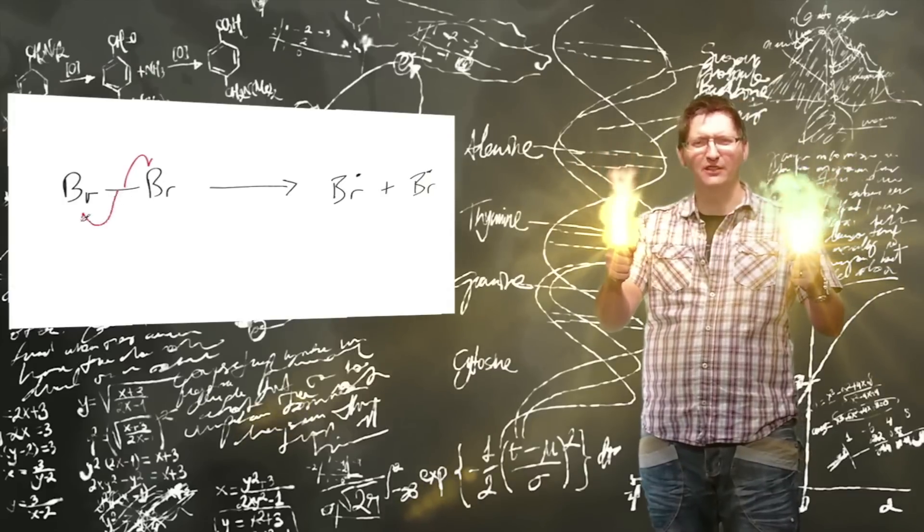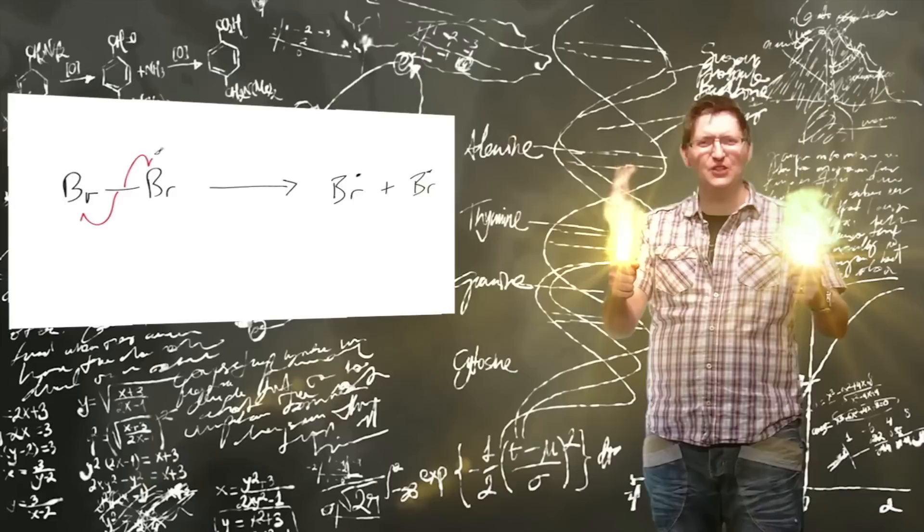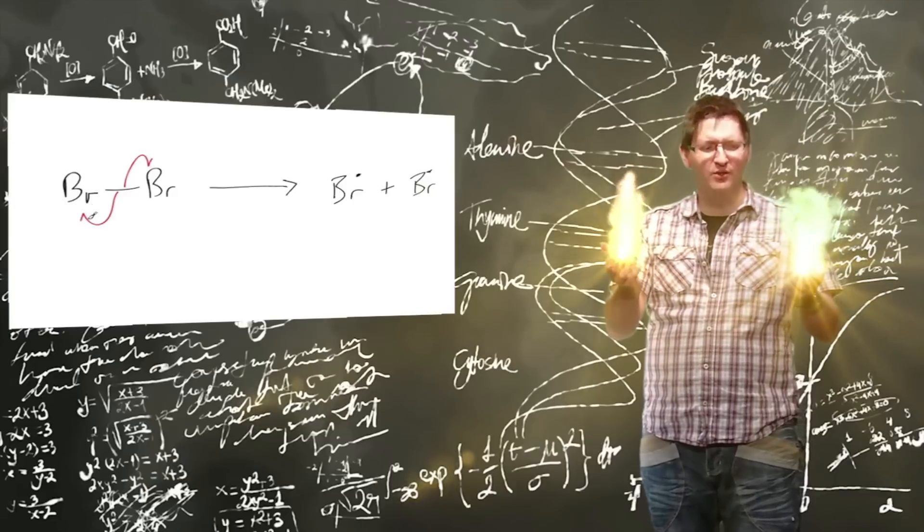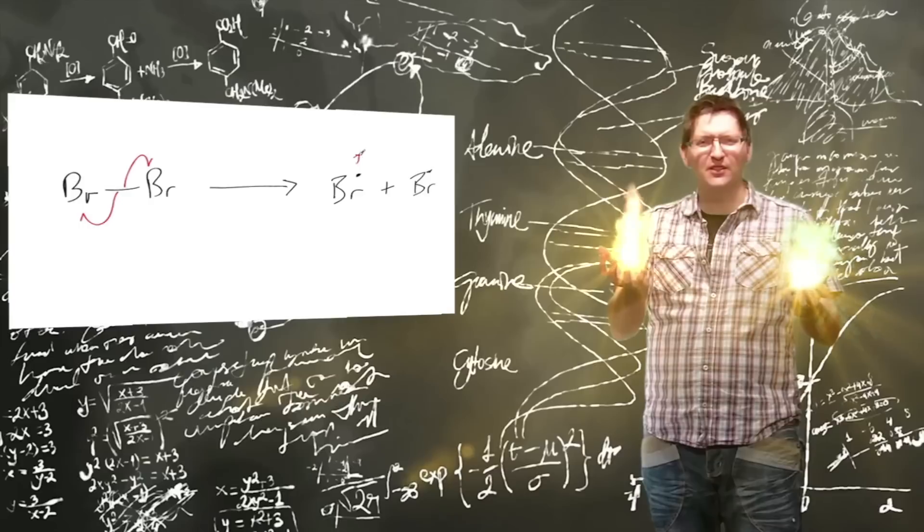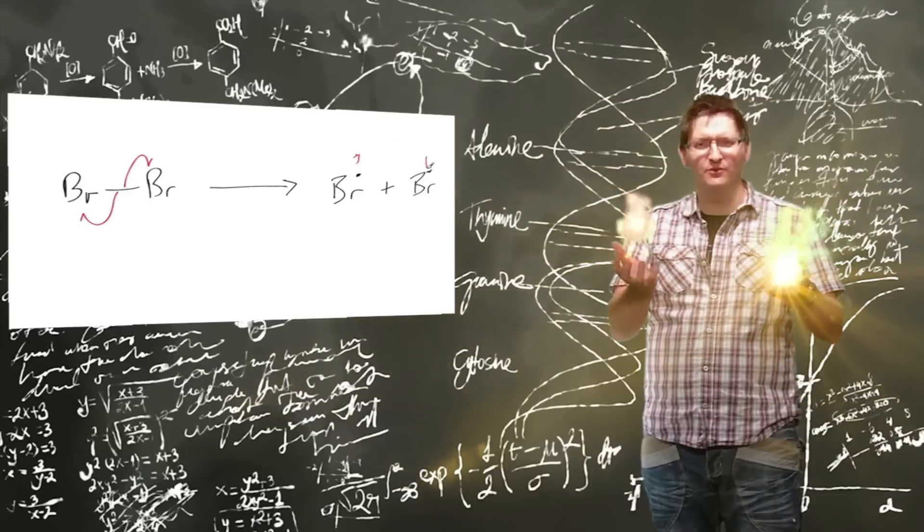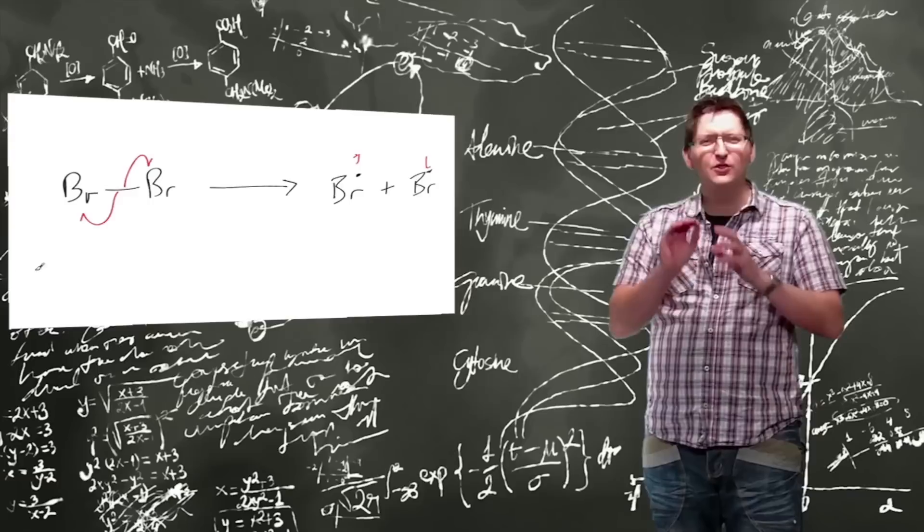These are highly reactive species called free radicals. In this case you've only got one electron in each atom. If you look to the other examples that I showed you before, there was two electrons traveling.